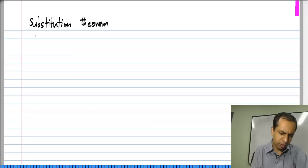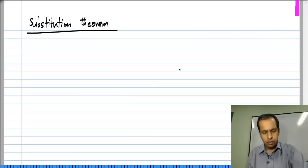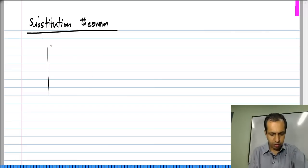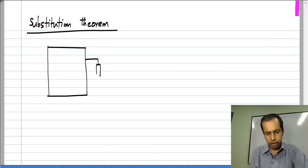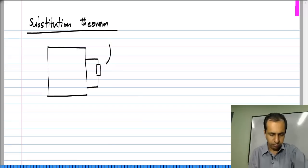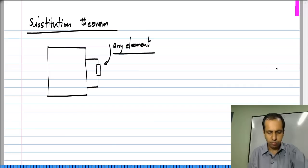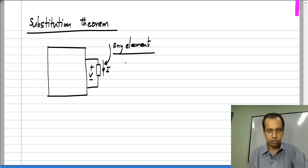In this lesson, we will consider another elementary circuit theorem known as the substitution theorem. Let us consider a circuit with some element — this element could be non-linear as well. It has some voltage V across it and some current I through it.